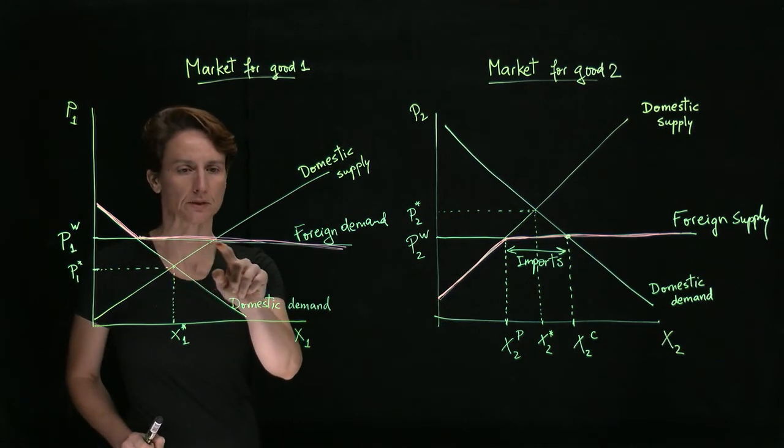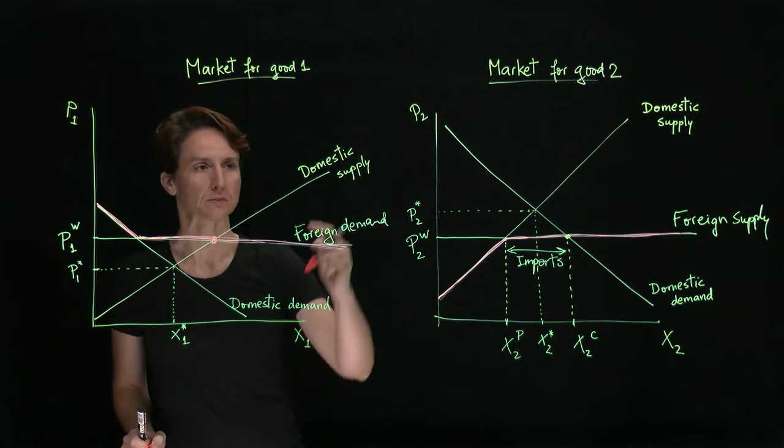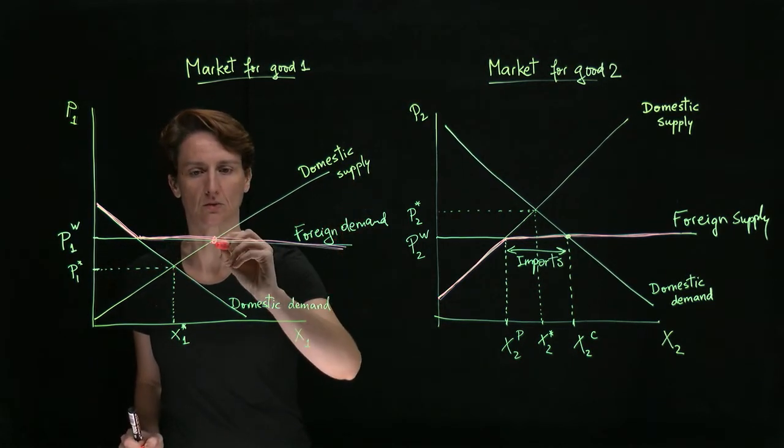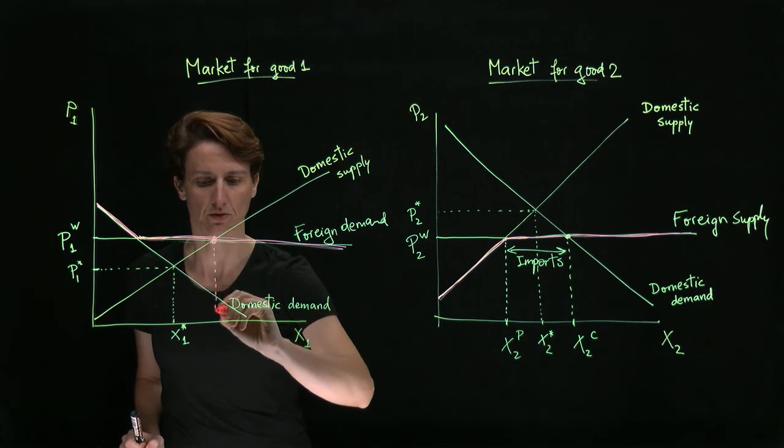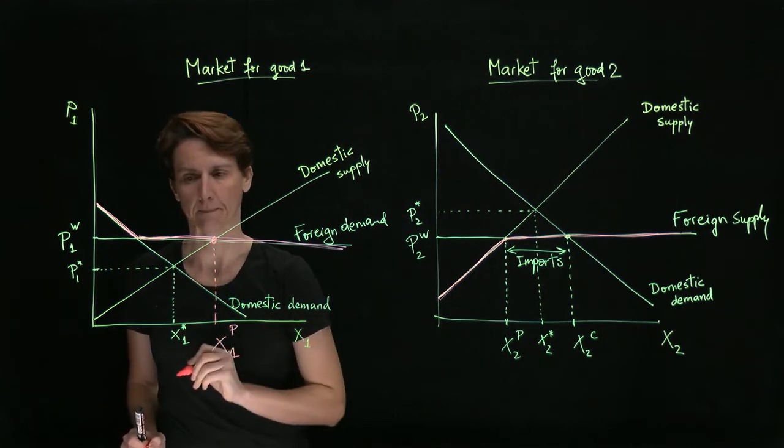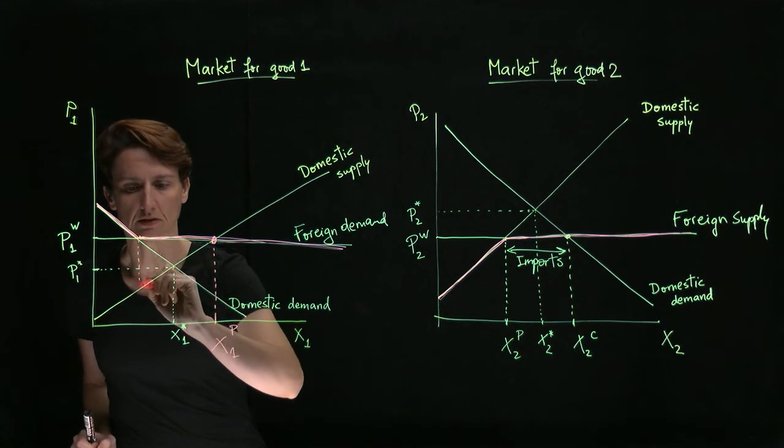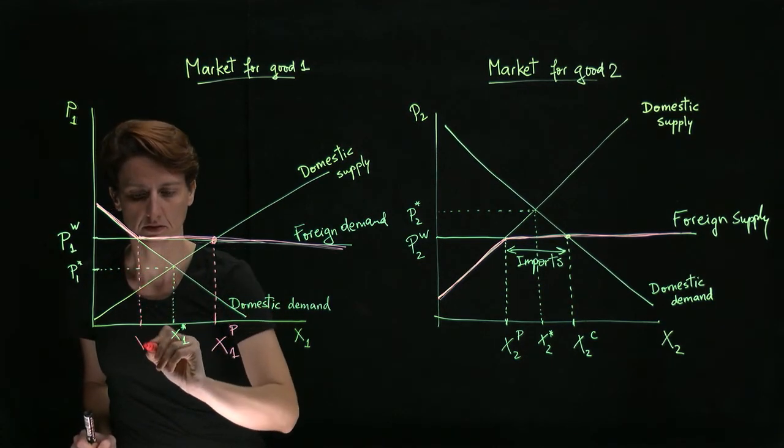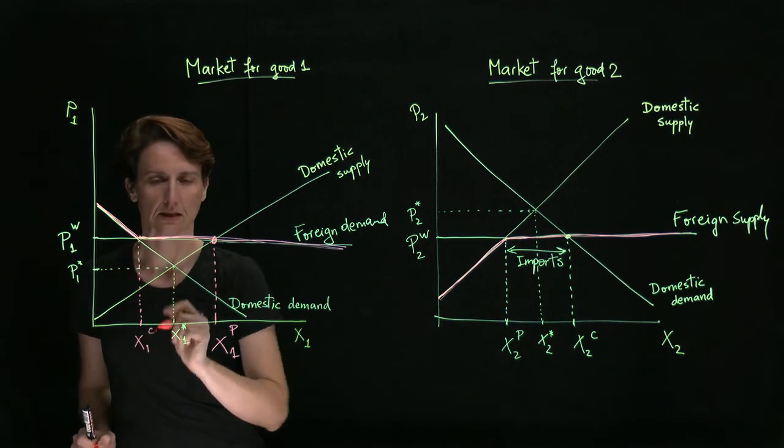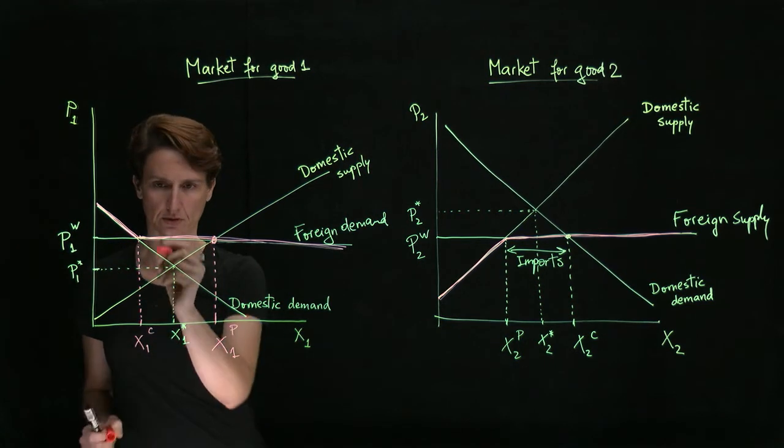So now the outcome will be, from the perspective of domestic producers, they will want to produce this quantity, X1P. However, only part of that will go to domestic consumers, X1C. The rest will go to foreign consumers, so it will be exports.